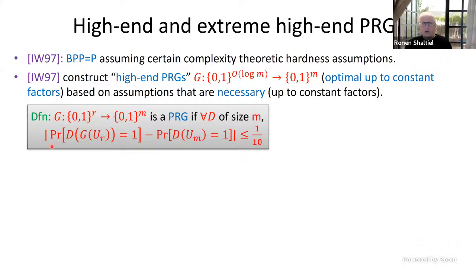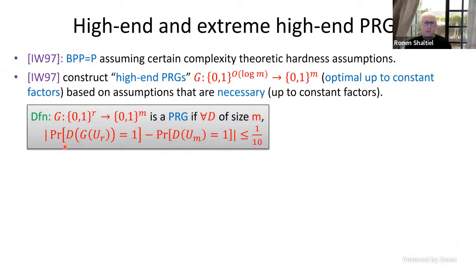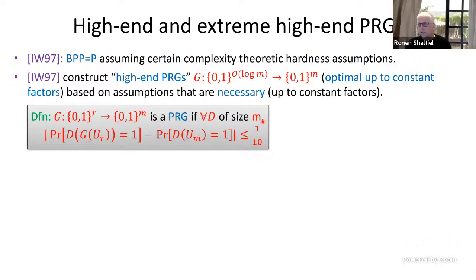A pseudo-random generator is a function that stretches R bits into M bits, such that for every circuit D of size M, the circuit D does not distinguish the uniform distribution from the output of a pseudo-random generator. The distinguishing advantage is a constant, let's say 1 over 10.